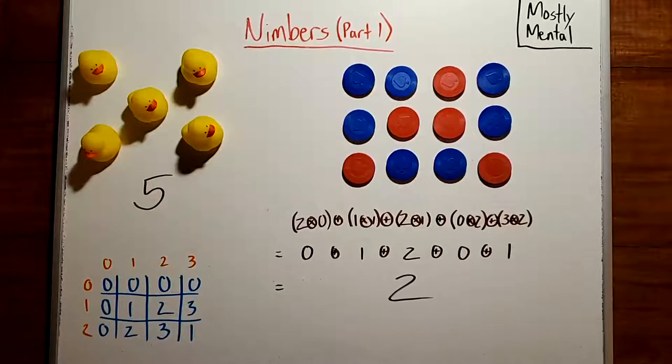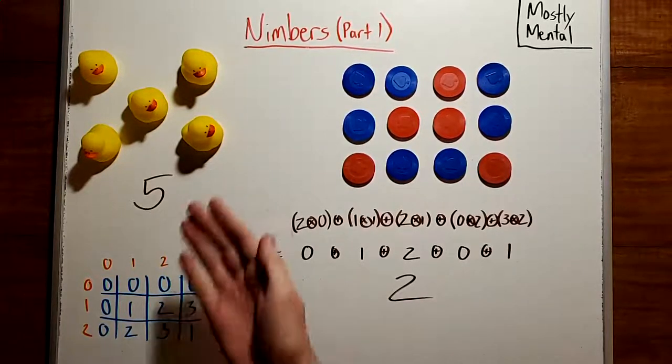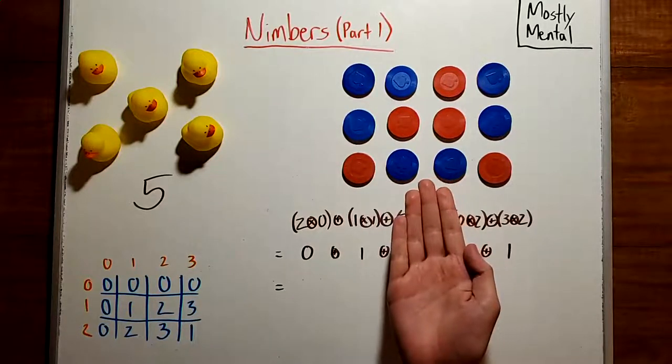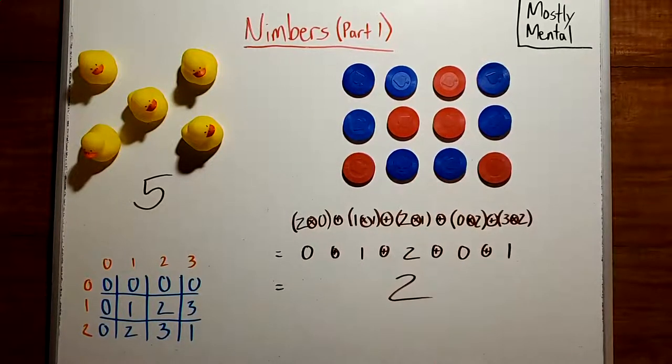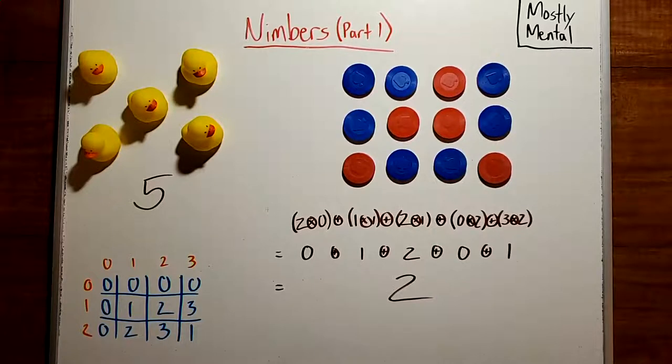Let's put together everything we've seen with an example game. Say we have the sum of a Nim pile and a game of Turning Corners. How can we win? First, we'll need to find the Sprague-Grundy values.